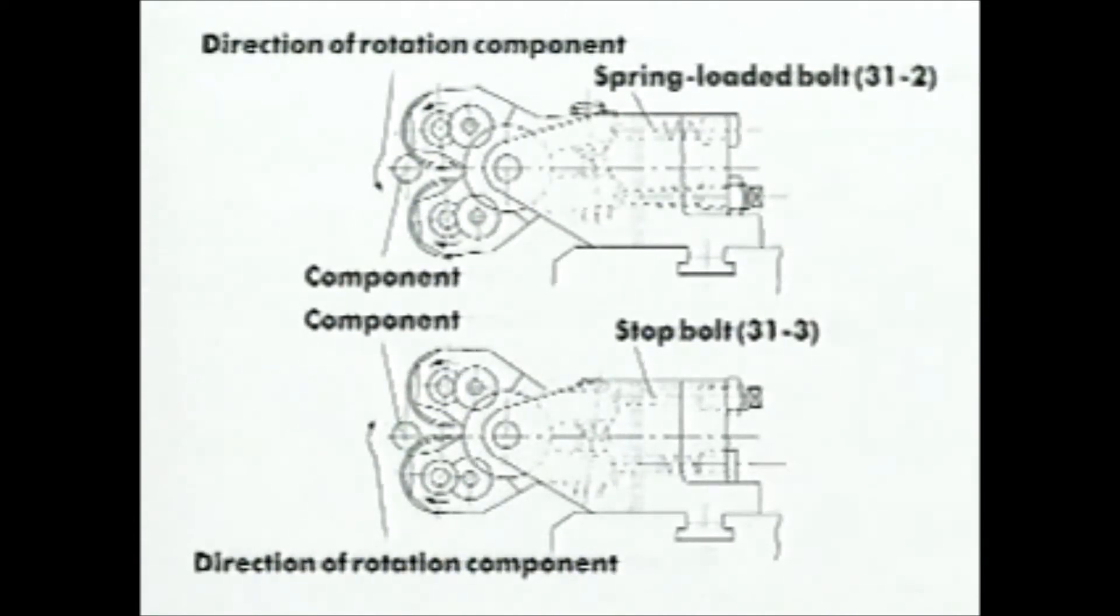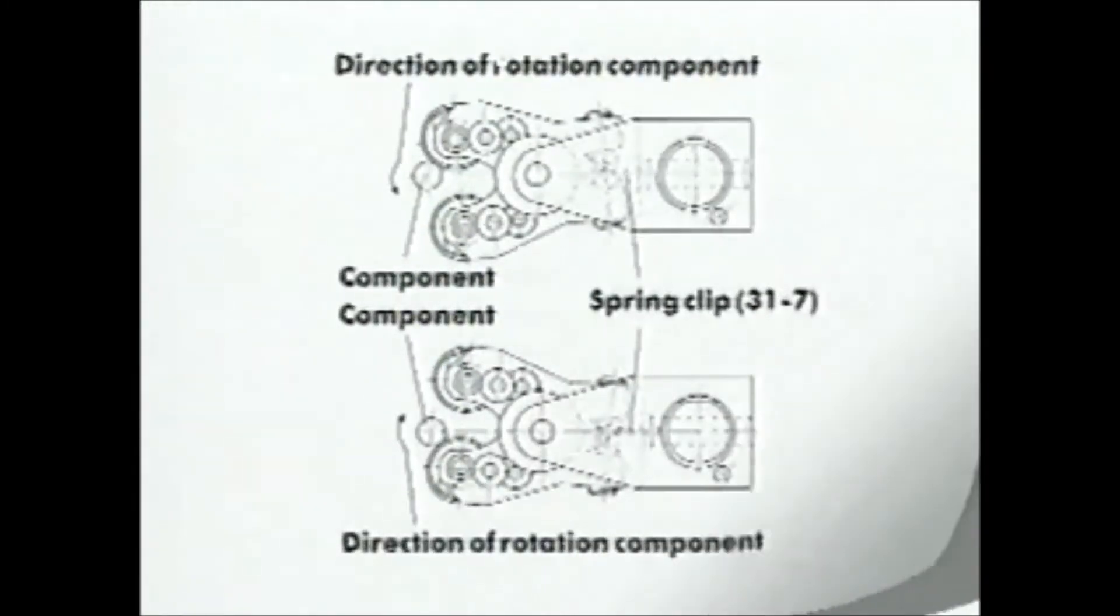Advance the attachment until this roll is about to contact the blank. Then set the solid bolt number 31-3 so that there is about 40 thousandths of an inch clearance between this roll and the blank. The same procedure must be performed with the spring clip to ensure the proper roll touches the part first. Now you're ready to make a part.